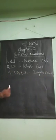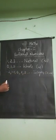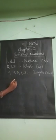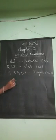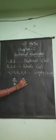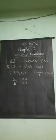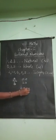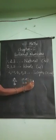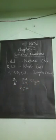Next, what is meant by rational number? Rational number means the collection of all integers — all the numbers that can be written in the form A by B. It is called a rational number, where A is an integer and B is also an integer, and B is not equal to 0.